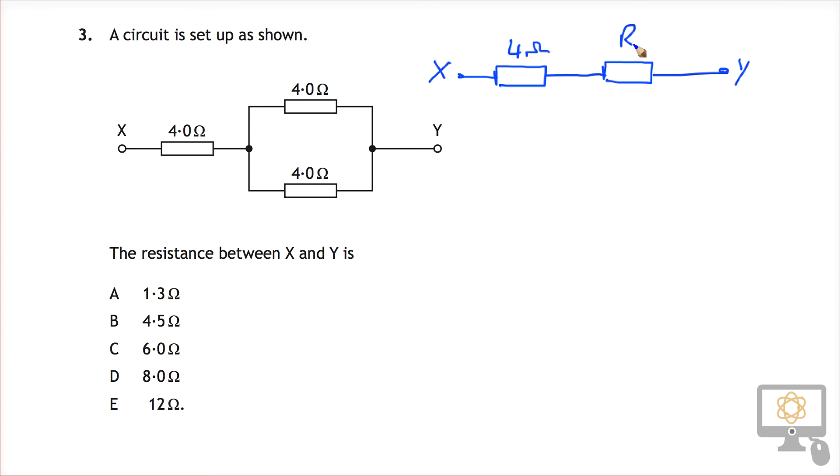So we need to determine what value R is so we can add that to 4 to get the total resistance. These two resistors are in parallel, so there's two ways to think about this.